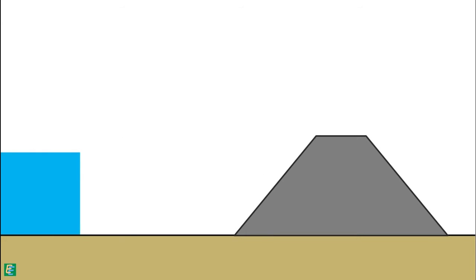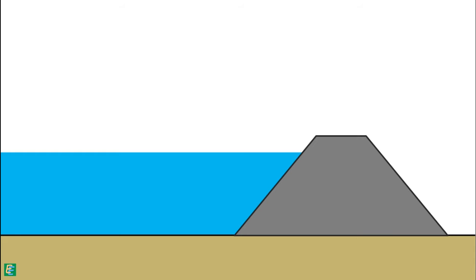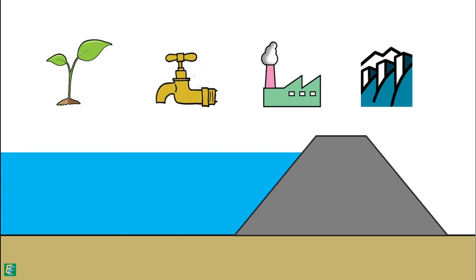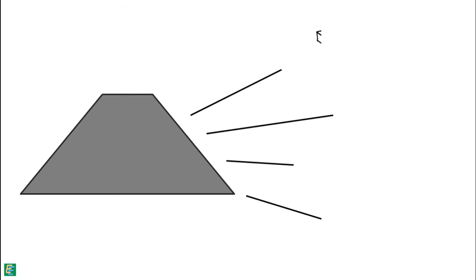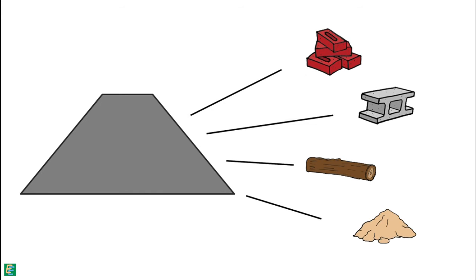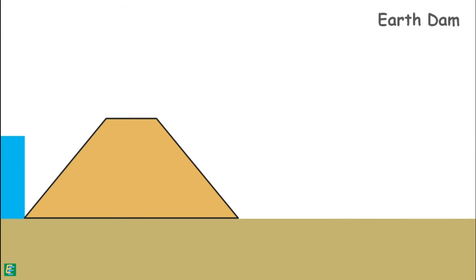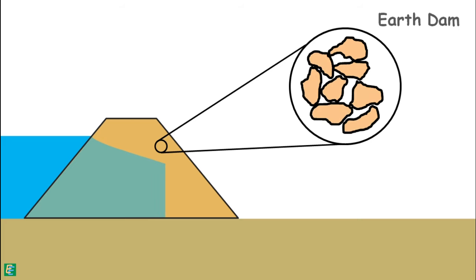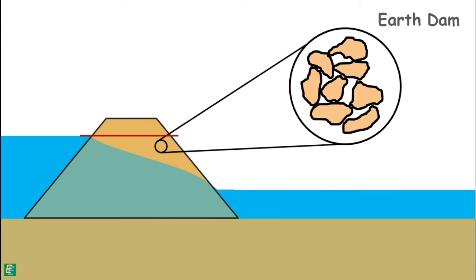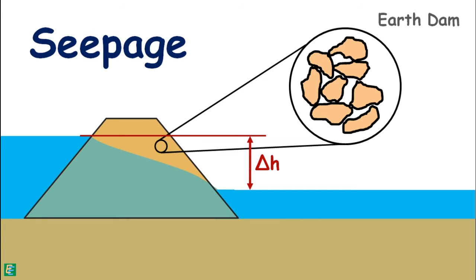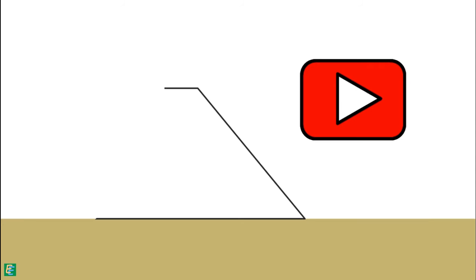A dam is a barrier that restricts the flow of water and can be used to collect it. This water may be utilized for many purposes. A dam can be constructed using different kinds of materials. In earth dams, the construction material is rocks and soil. The water that the dam holds flows from upstream through the voids present in the soil of the dam body to the downstream by hydraulic head. This phenomenon of movement of water through soil is called seepage.